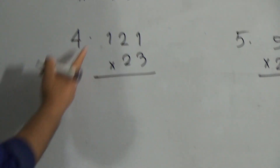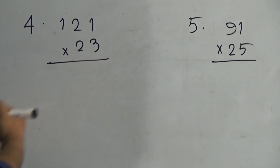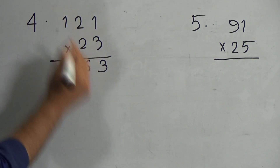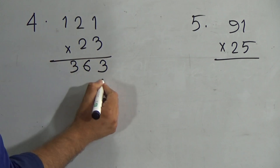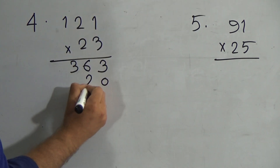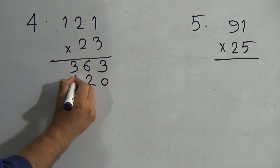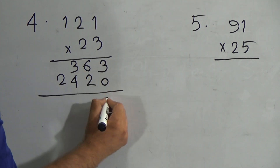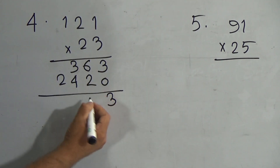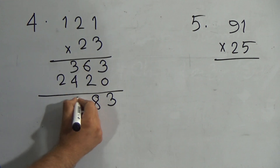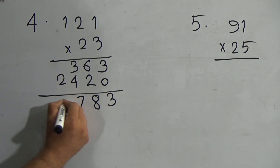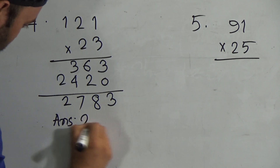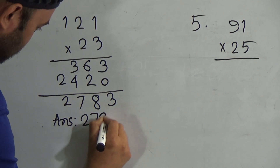Now question number four: 121 multiplied by 23. Three ones are three; three twos are six; three ones are three. Then use zero: two ones are two; two twos are four; two ones are two. Then add these numbers: three plus zero is three; six plus two is eight; three plus four is seven; and two is here. So the answer is two thousand seven hundred eighty-three.